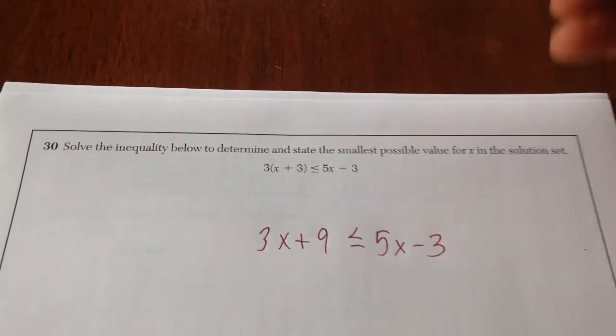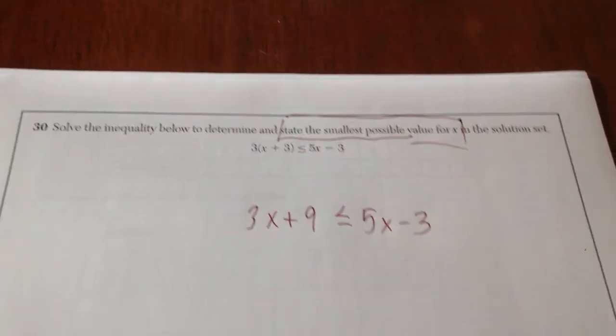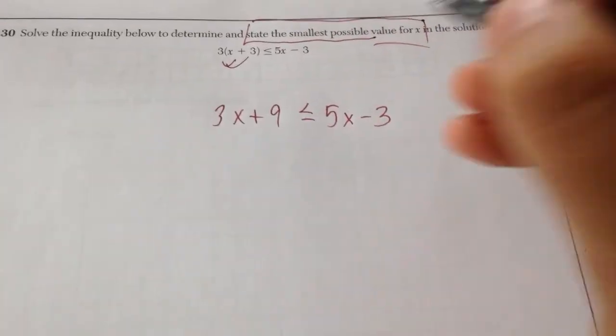Number 30 said solve the inequality below to determine and then state the smallest possible value for x. Okay, so I'm going to distribute to start. I get 3x plus 9.